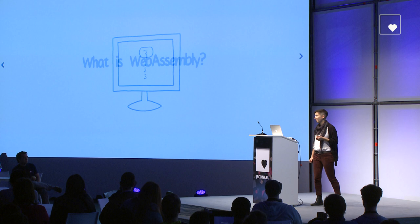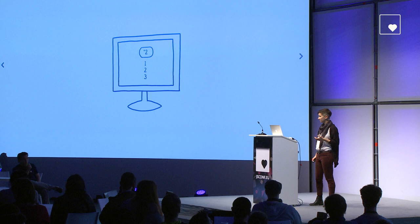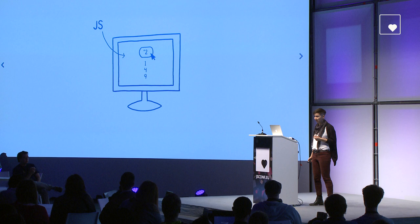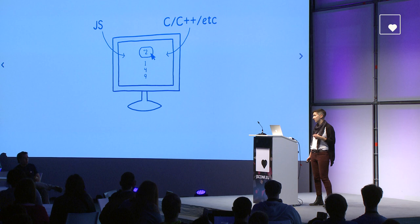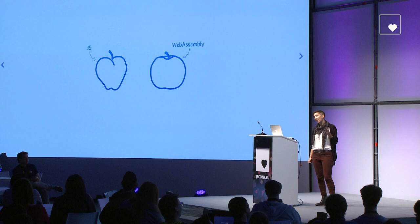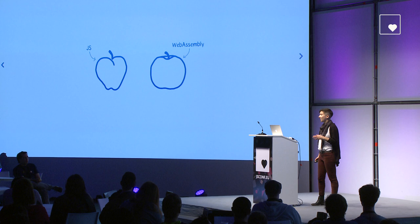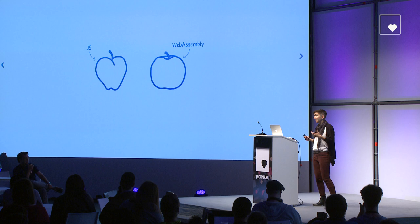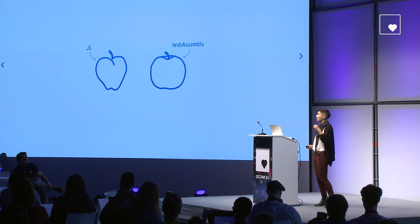But first, what is WebAssembly? WebAssembly is a way to run programming languages other than JavaScript in your web pages. In the past, when you wanted to run code on a web page, you had to use JavaScript. But with WebAssembly, it will be possible to do these things with other languages besides JavaScript. When people say that WebAssembly is fast, what they're comparing it to is JavaScript — that's the apples-to-apples comparison. We think that people are probably going to be using these two hand-in-hand in their applications.